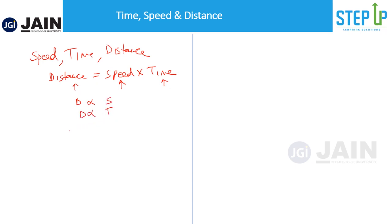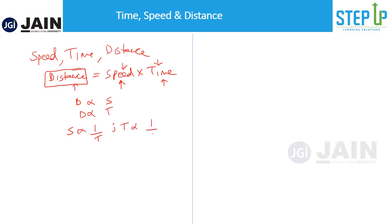However, the relationship between speed and time is one of inverse proportion. If you make the distance constant — meaning you have to cover a fixed distance — and you increase your speed, you take less time to cover that distance. But if you take more time, your speed has to reduce to cover the same distance. So between speed and time, there is an inverse relationship.